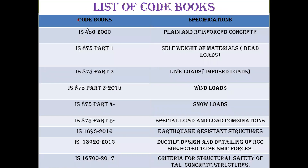There are certain code books we follow in India. First is IS 456:2000 — for plain and reinforced cement concrete. Then IS 875 Part 1 — for the unit weight of materials, used for dead loads. IS 875 Part 2 is for live loads, also called imposed loads, and it specifies live loads for kitchens, staircases, corridors, garages, bathrooms, etc.